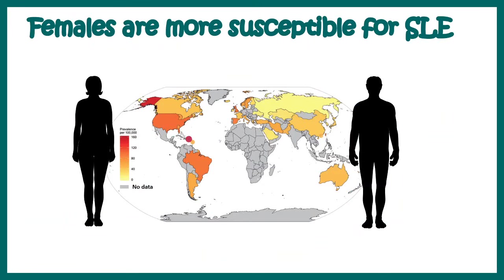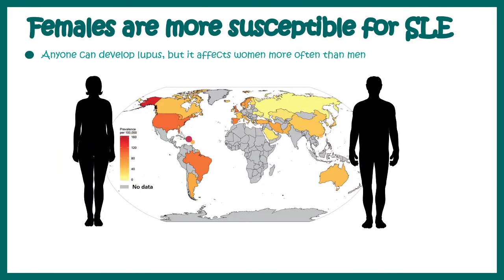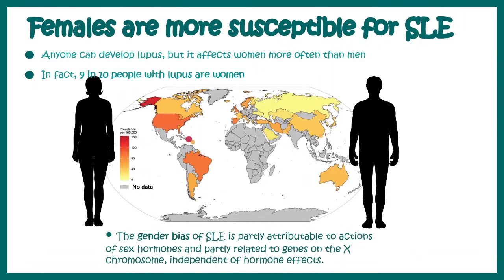Females are more susceptible to systemic lupus erythematosus. Anyone can develop systemic lupus, but there are some dispositions in females that make them more vulnerable. In fact, 9 out of 10 people with lupus are women. There is a gender bias, and many of the risk genes are associated with the X chromosome.